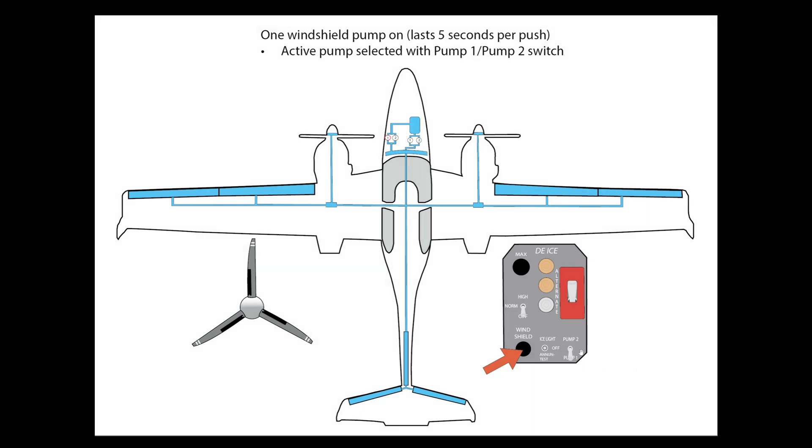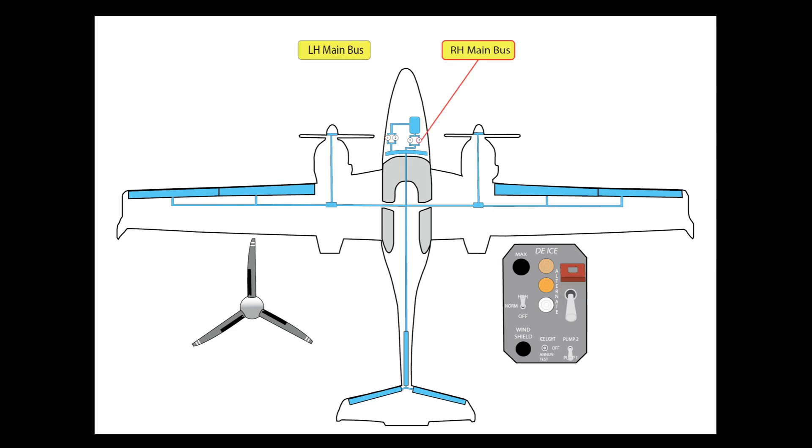You can see here now we have pump one selected. So in that case, when I press the windshield pump for five seconds, pump one is the active pump for the windshield system.